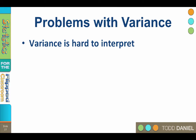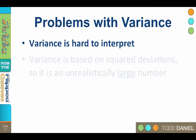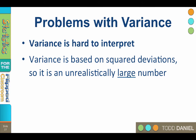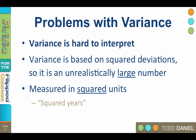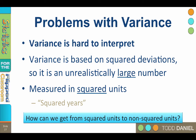Variance is a legitimate measure of variability, but it has limitations. First of all, variance is hard to interpret. Variance is based on squared deviations, so it is an unrealistically large number. Also, variance is based on squared units that are hard to think about. If we were talking about age, the variance might be four squared years. What does that mean? What is a squared year? So how can we get from squared units to non-squared units?